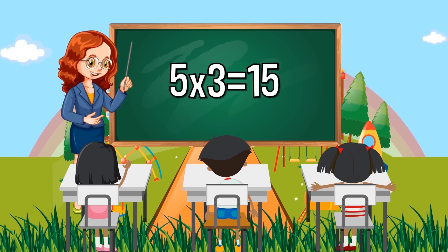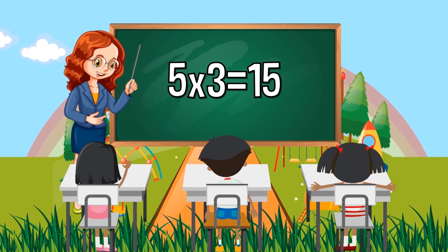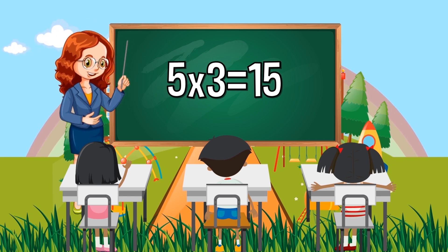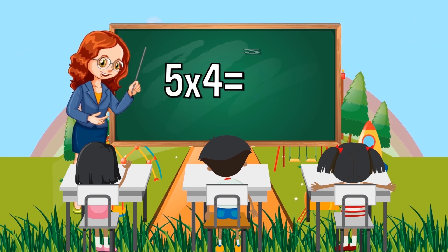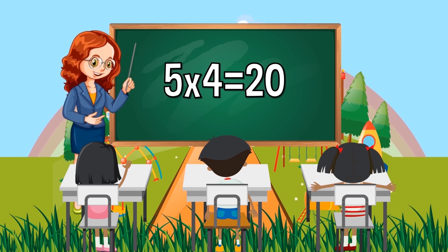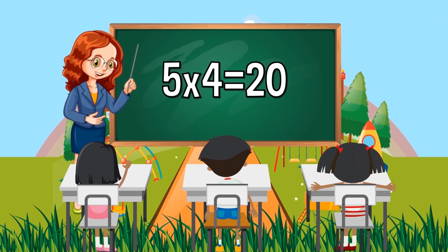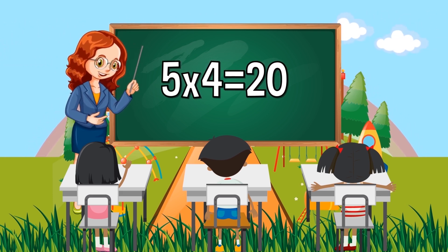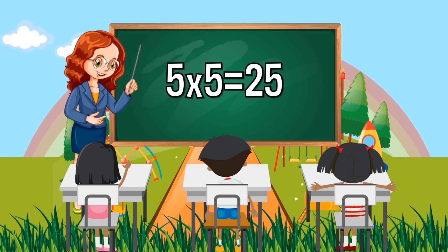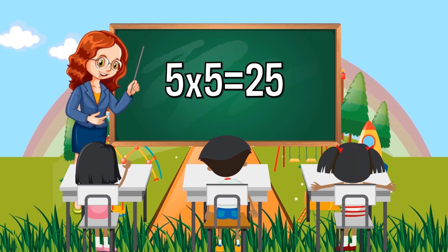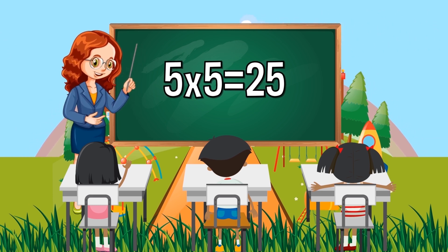5 times 3 equals 15. 5 times 4 equals 20. 5 times 5 equals 25.